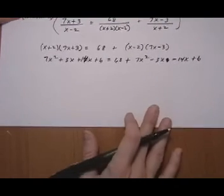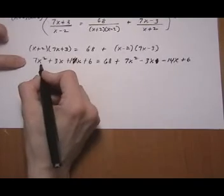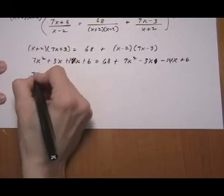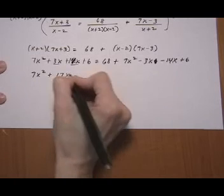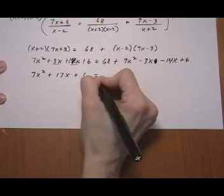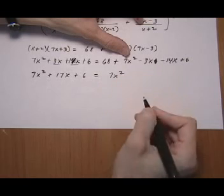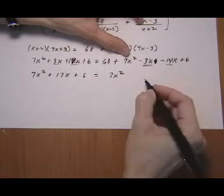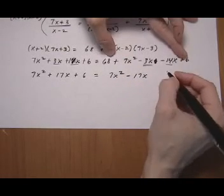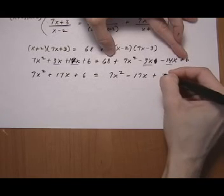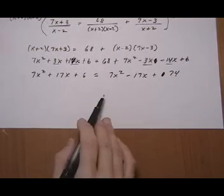Alright. So that's all foiled out. We clear parentheses. Now we're going to combine like terms. Well, let's see. We don't have another x squared term on the left. So we just have 7x squared. 3x and 14x is 17x. Bring down the plus 6. Equals x squared term, let's start with that. There isn't another one. And then the x terms, we get minus 17x. And then we get 68 plus 6. And that's plus 74.